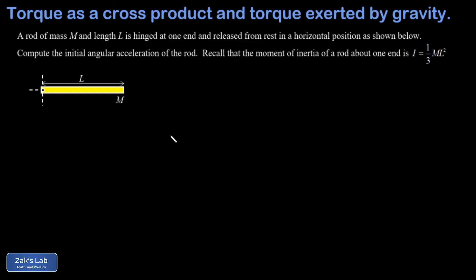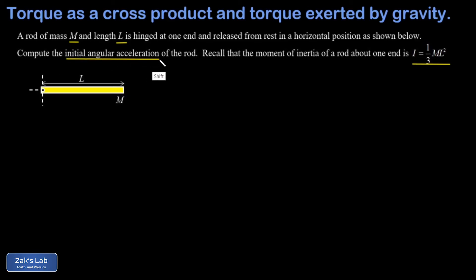What we want is the initial angular acceleration of the rod. Using our torque formula, all I have to do is pretend all the mass is concentrated at the center of mass, then compute the torque at that location. The force of gravity is exerted at the center of mass using the total mass M times g.